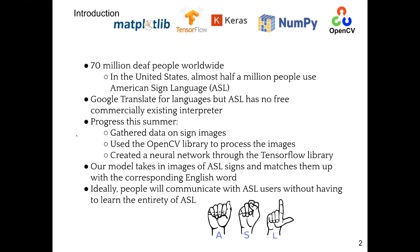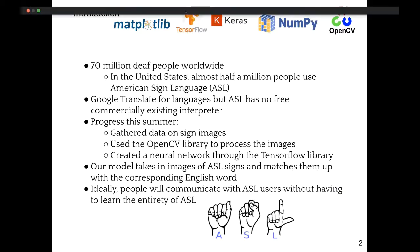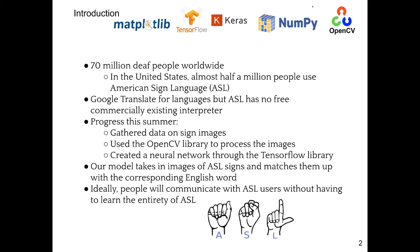Throughout the world, over 70 million people are deaf. In the United States, about half a million people utilize American Sign Language due to having no other alternative. Google Translate exists for numerous languages, however, despite being used so frequently, ASL has no free commercially existing interpreter. So, in order to come up with a solution for this, our group has gathered data on sign language, used OpenCV to process the images, and created a neural network using TensorFlow. Our model takes in ASL signs and corresponds them to English words, and using this, we hope that people will be able to communicate with ASL users without having to learn the entirety of the language.